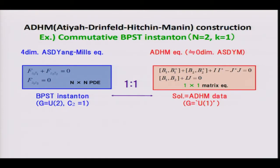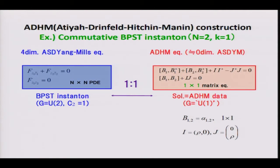Let's construct the typical example of BPST instantons in this procedure. This is the N=2, K=1 case. The ADHM equation is perfectly and trivially soluble because it is just a k-by-k matrix equation, and now k=1, so it is a scalar equation. The commutator term automatically drops out. We can set the 1-by-1 matrix B as an arbitrary complex number. The remaining term is also easily solved: I and J are N-by-K matrices, and the solution has rho as a real parameter, satisfying I†I = ρ² and J†J = ρ² canceling out, and the inner product of I and J equals zero. This is the general solution.